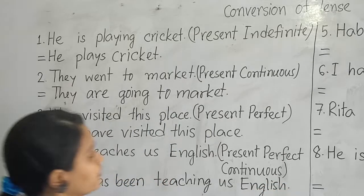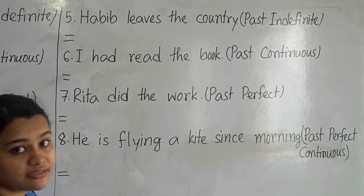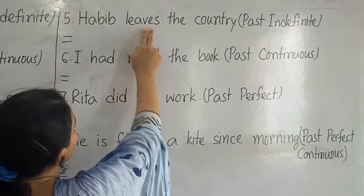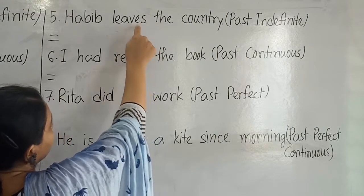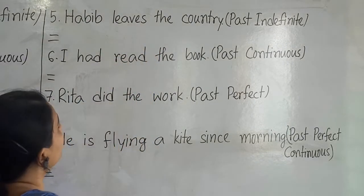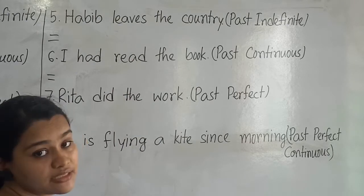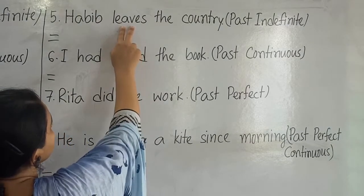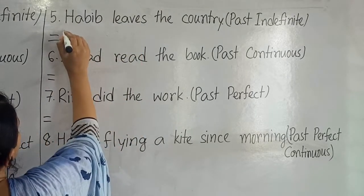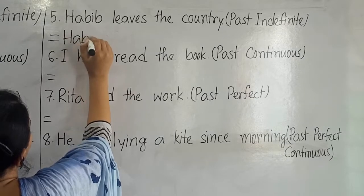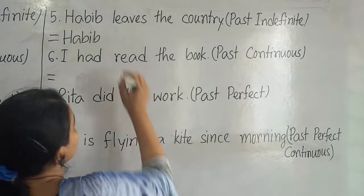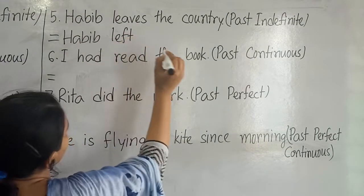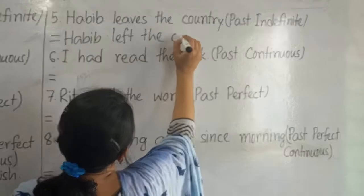Number five: 'Habit leaves the country.' We will change it to past indefinite tense. Look at the word 'leaves' — we add 'S' at the end of the word and it is in present indefinite tense. We will change 'leaves' to its past form. The past form of 'leave' is 'left.' So: 'Habit left the country.'